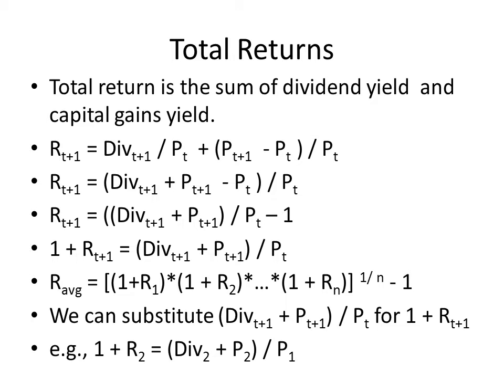Just for an example, for that 1 + R2 term, we could instead have the dividend at time 2 plus the price at time 2 divided by the price at time 1. And it would mean exactly the same thing. Now, right now, you're probably wondering why we do this. I'm going to show you shortly that this makes solving problems much, much easier.